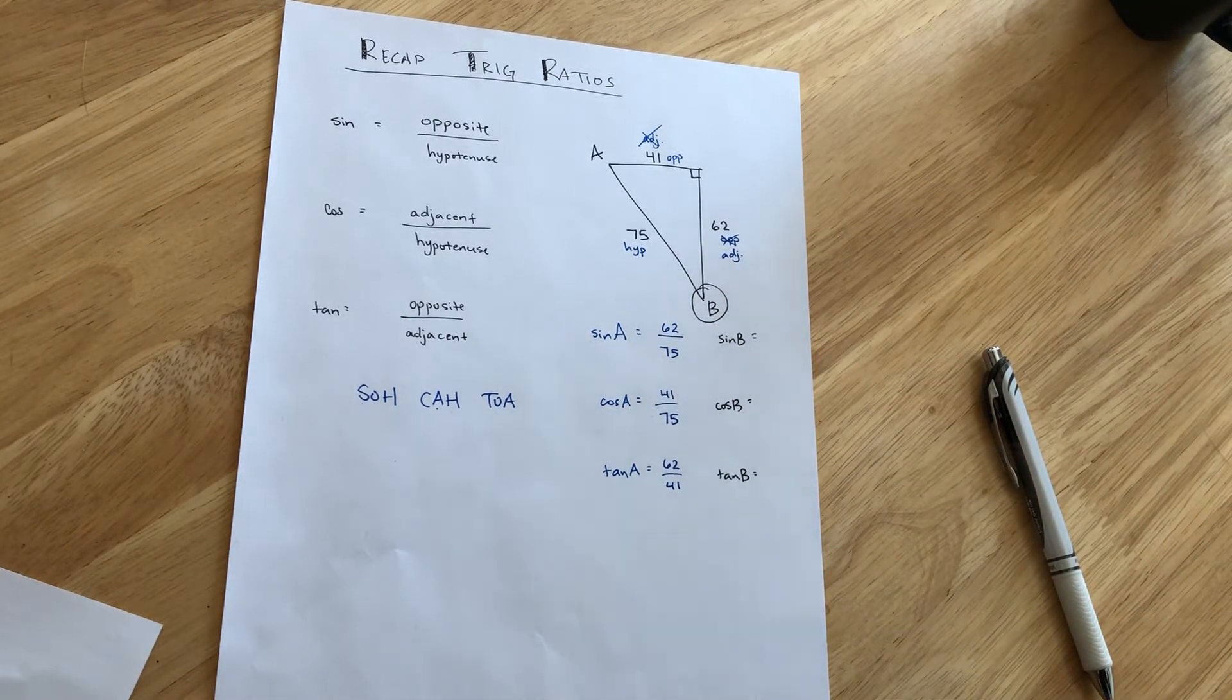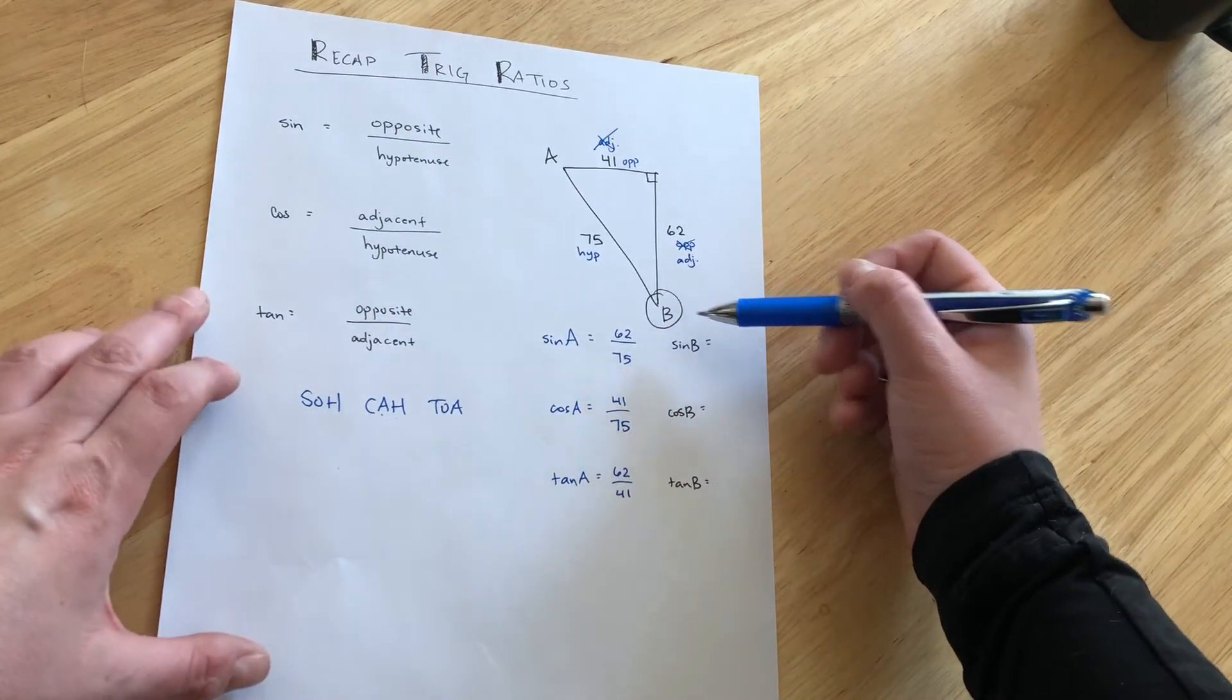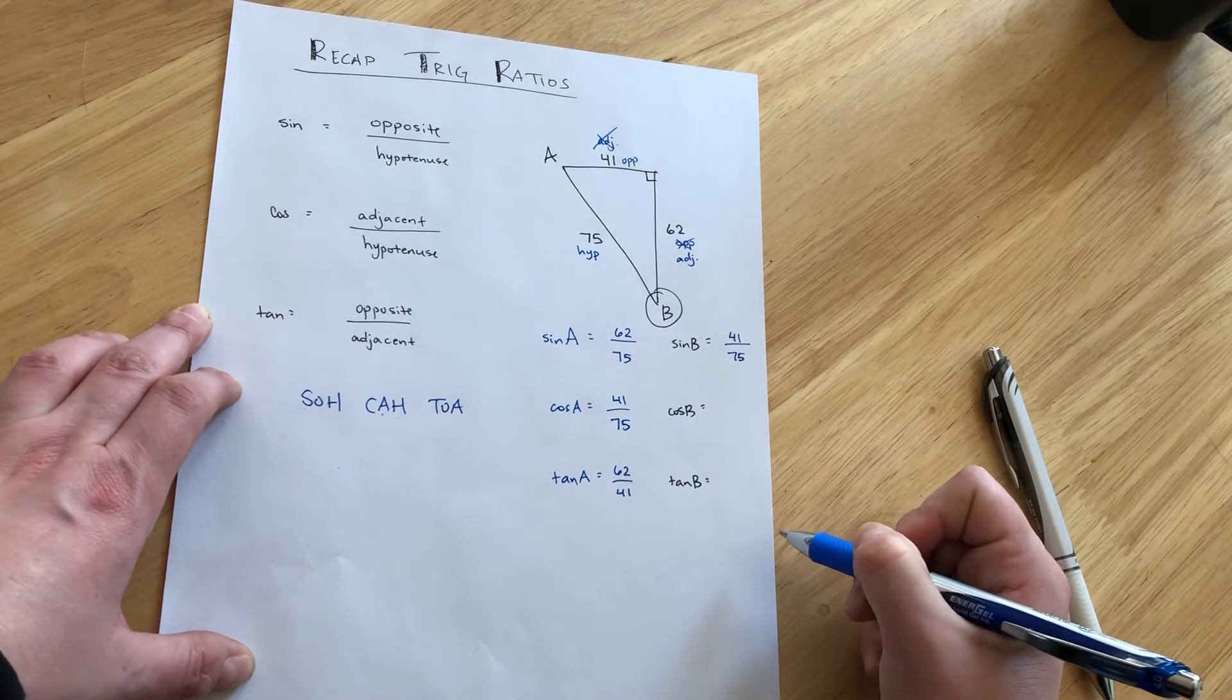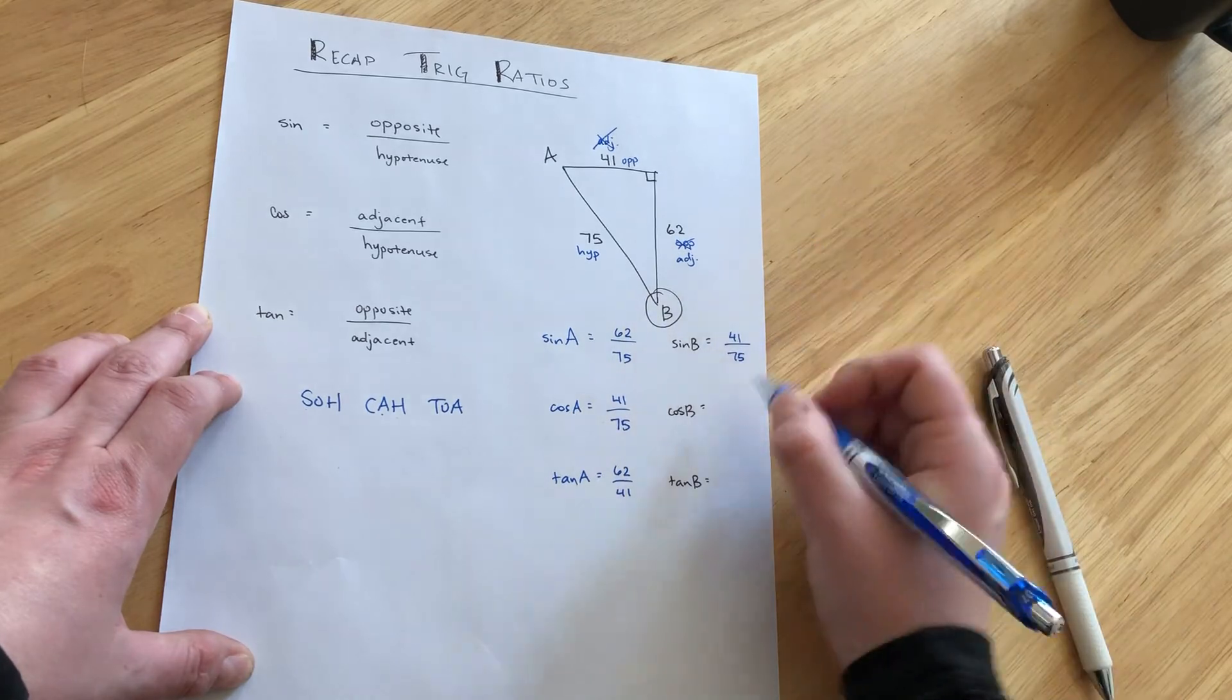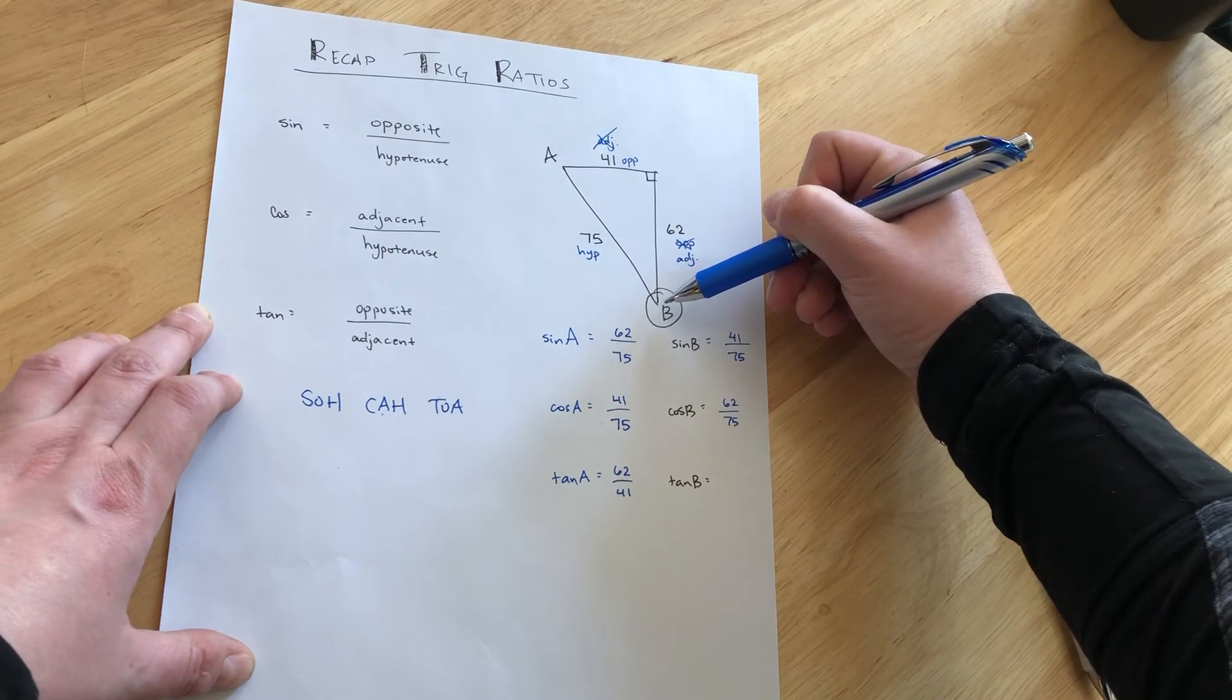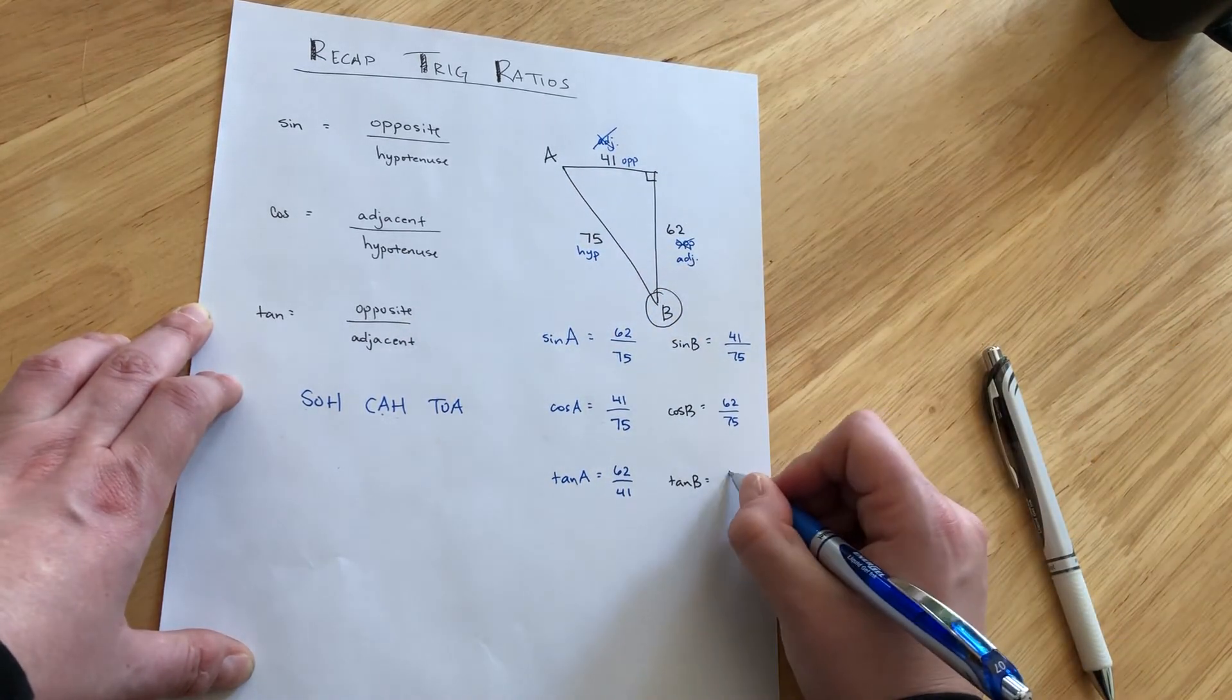So from the perspective of angle B, sine of B is opposite 41 over the hypotenuse 75. Cosine of angle B puts the adjacent 62 over the hypotenuse 75. And lastly, the tangent of angle B puts the opposite 41 over the adjacent 62.